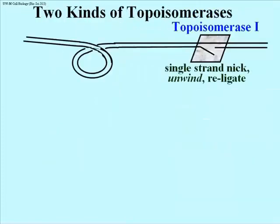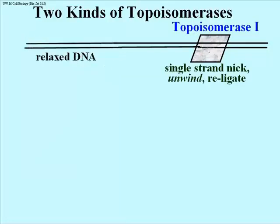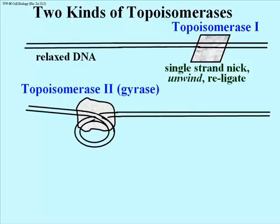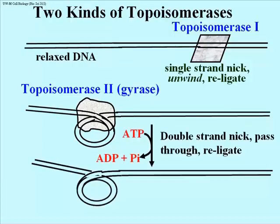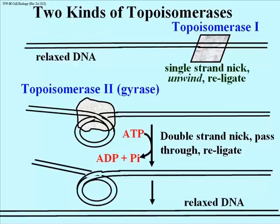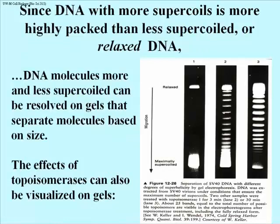Topoisomerases 1 and 2 act to relieve super-coiling by allowing double helical DNA that is too tightly twisted to untwist. Topoisomerase 1, or topo-1, nicks one of the two strands of DNA and allows controlled unwinding of the cut strand around the uncut strand, then re-ligation of the nick after the super-coil is relaxed. Topo-2 nicks both strands of DNA, passing one length of twisted DNA through the cut, with the result that the twist or coil is relaxed. Since super-coiled DNA is more compact than relaxed DNA, in the case of an E. coli chromosome, more super-coiled DNA behaves on electrophoretic gels as if it were smaller than the more relaxed topoisomers.